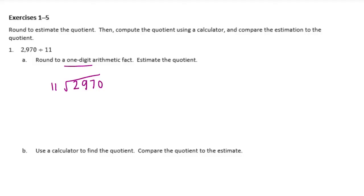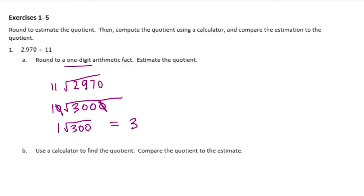11 is close to 10, and 10 is easy to divide by. I'm going to round 2,970 to 3,000. We can cancel out the zeros to get 300 divided by 1, which equals 300. Or we can simplify further: 3 divided by 1 is 3, then add the two zeros back. So our estimate is 300.